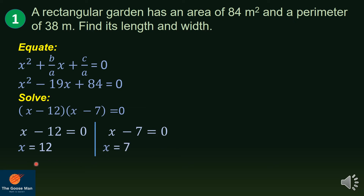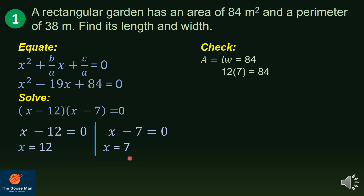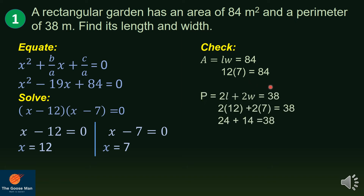We can say that if the length is 12, the width is 7. On the other hand, if the length is 7, the width is 12. To verify, recall that area equals length times width, which should be 84 based on the problem. So 12 times 7 — is it equal to 84? Yes, 84 equals 84.